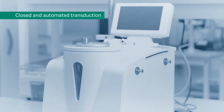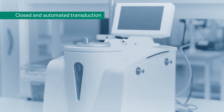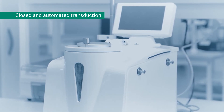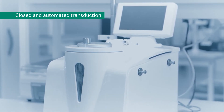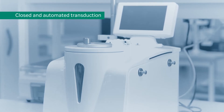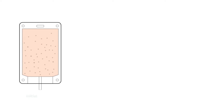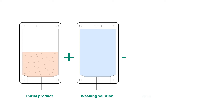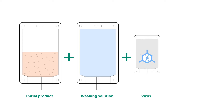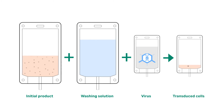Spinoculation allows for closed and automated inoculation of a viral vector into a cell population to transduce and genetically modify these cells through physical contact. The first step involves taking a cellular product and concentrating it down to a volume you specify before running an optional wash step. Then the system will introduce the viral vector and spin the cell-virus mixture for a period of time and at a force of your choosing. Lastly, the application resuspends the cell mixture up to a desired final volume.